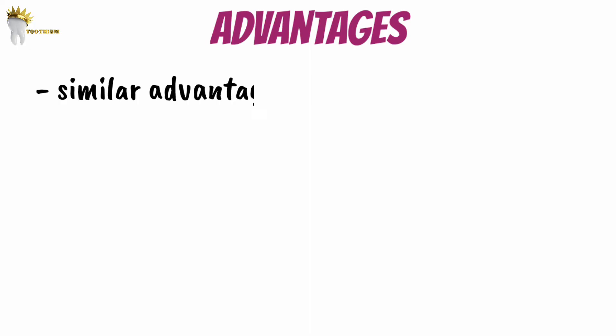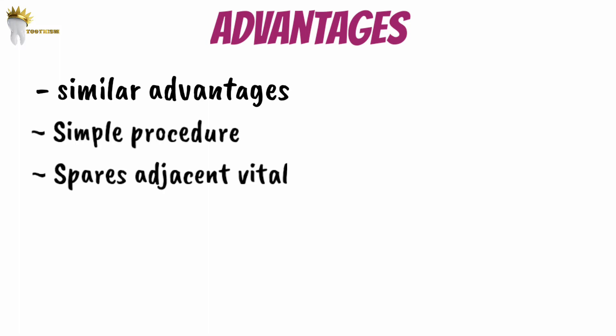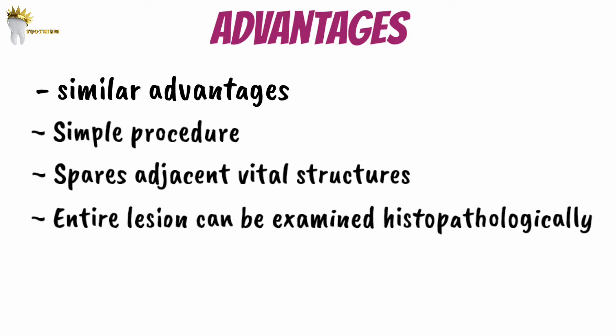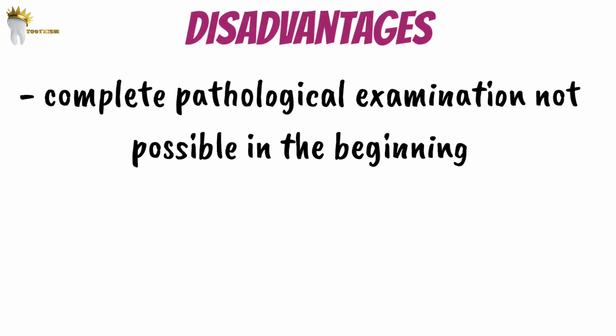Advantages of combined marsupialization and enucleation are the same as those for marsupialization and enucleation. This is a simple procedure that spares adjacent vital structures and the entire lesion becomes available for histologic examination. Another advantage is that between the two procedures, the cystic lining gets thicker, so enucleation becomes easier to carry out. The disadvantage is that the total cyst is not removed initially for pathologic examination, but after subsequent enucleation, the whole cyst can be submitted for histopathologic examination.